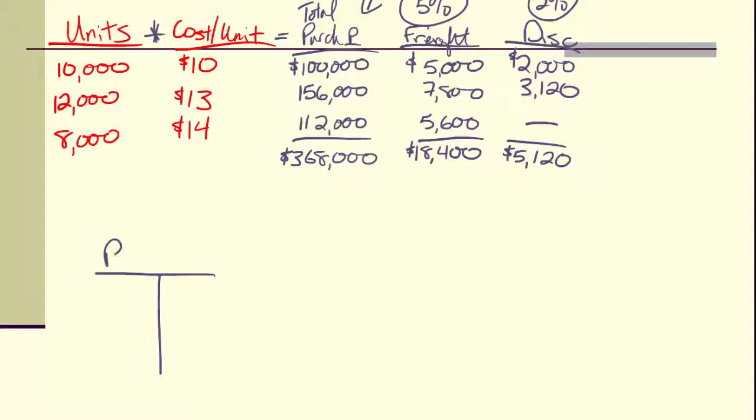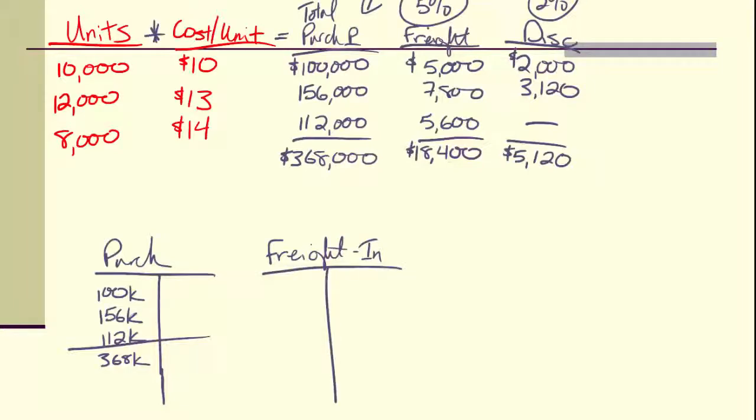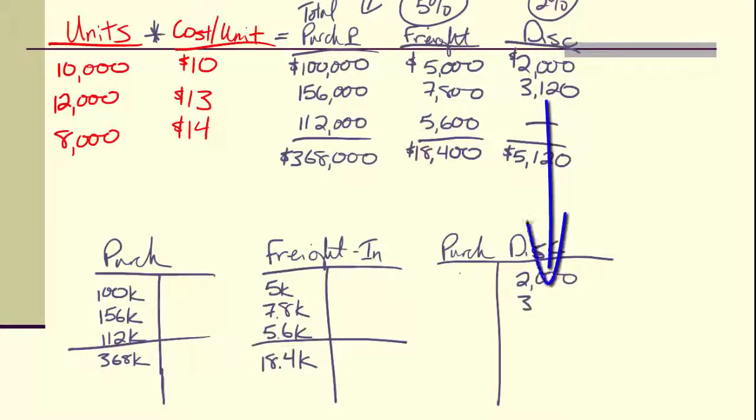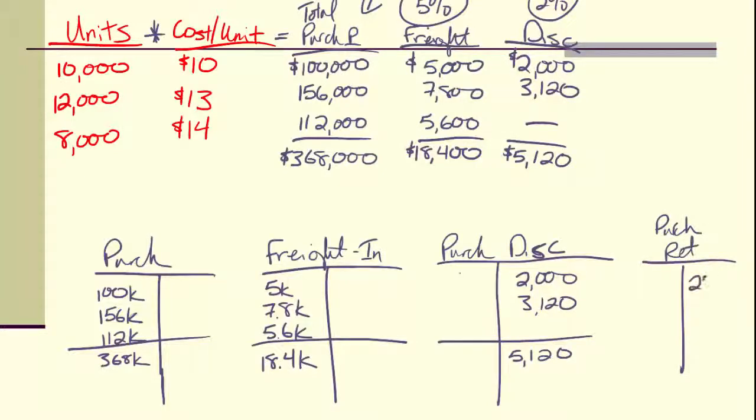And the first thing we need are some t-accounts here. We would have a purchases account. And it would have this $100,000, the $156,000, and the $112,000, and a balance of $368,000. I'm just going to use that K to abbreviate there. We'd have a freight in account. $5,000, $7,800, $5,600, and a balance of $18,400. Next we have a purchase discount. And this is reducing the value of my purchases, so it's actually going to have a credit balance. That's $2,000, $3,120 for a total of $5,120. And finally, we have a purchase return of $25,000. And that's going to be our balance there. We shipped back that $25,000.